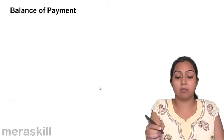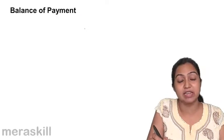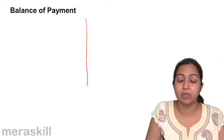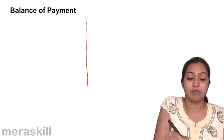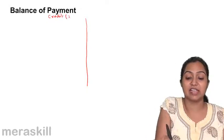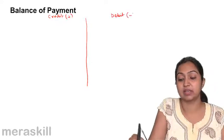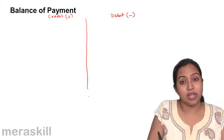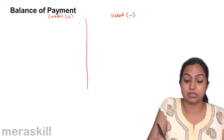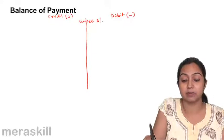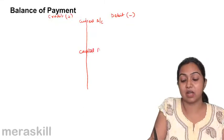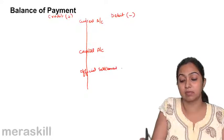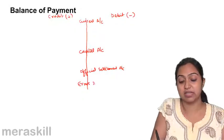Let us understand how you make a balance of payment. It is made on the basis of double-entry bookkeeping, so you show credit on one side and debit on the other side. The only difference is that in the balance of payment, you show credit on the left-hand side and debit on the right-hand side, which is the opposite of the normal journal system. The balance of payment is horizontally divided into four sections: current account, capital account, official settlement account, and errors and omissions.